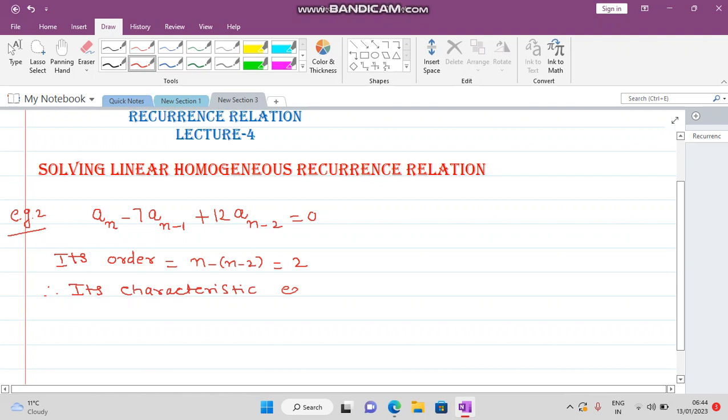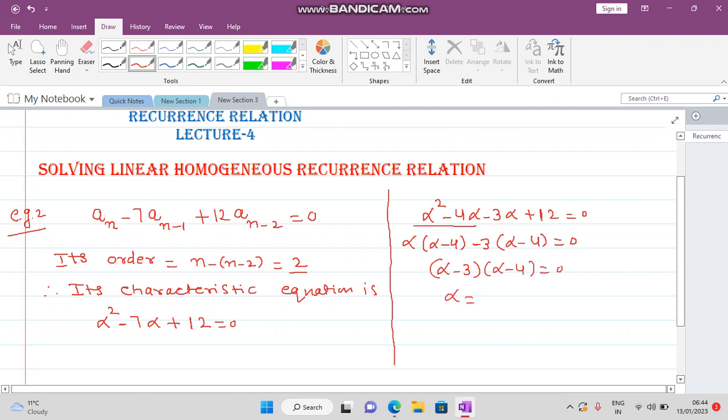Its characteristic equation is alpha squared minus 7 alpha plus 12 equals 0. So factorize this equation. It is alpha squared minus 3 alpha minus 4 alpha plus 12 equals 0. Take alpha common from this: alpha(alpha - 3) minus 4(alpha - 3) equals 0. So what is the value of alpha? Alpha is 3 and 4.